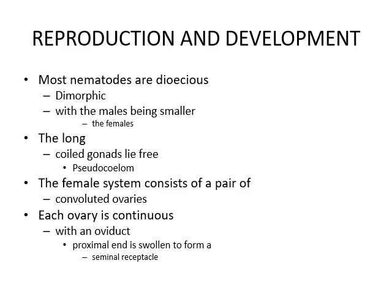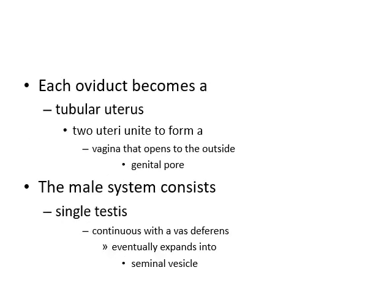The long coiled gonads live free in the pseudocoelom. The female system consists of a pair of convoluted tubules. Each ovary is continuous with an oviduct whose proximal end is swollen to form a seminal receptacle. Each ovary becomes a tubular uterus, and the two uteri unite to form a vagina that opens to the outside through the genital pore.